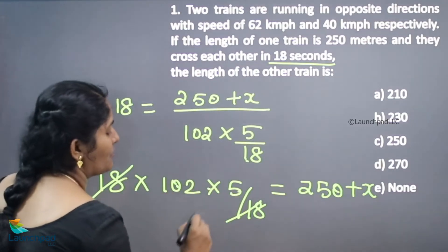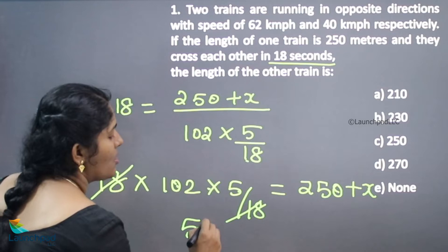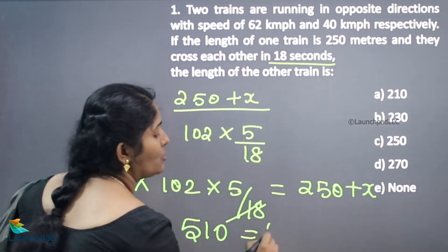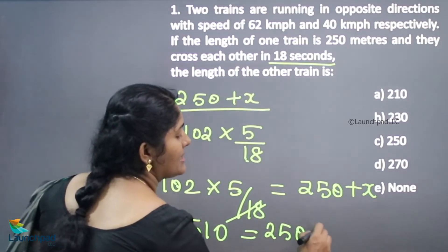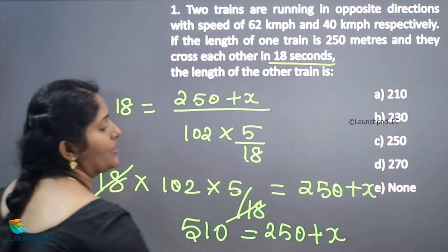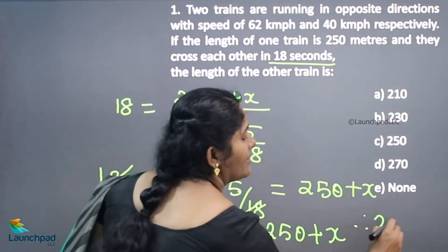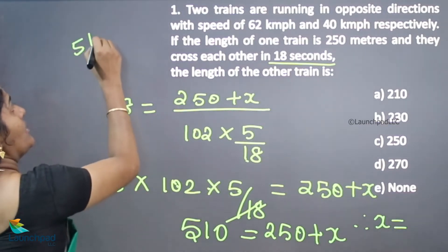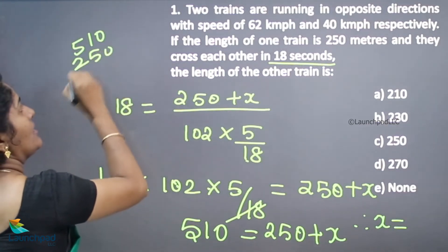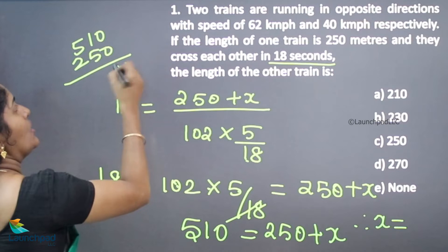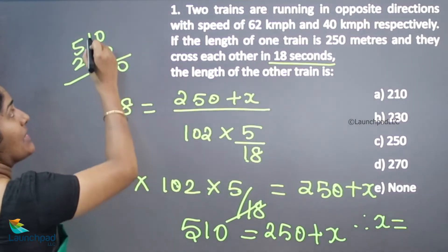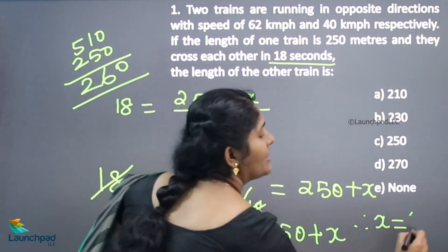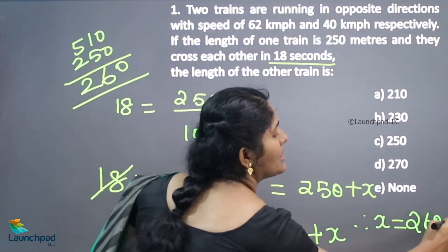So we get 102 into 5: 5 twos are 10, 1 two is 2 — that gives 510, which equals 250 plus x. Therefore the length of the other train is 510 minus 250. 510 minus 250: 11 minus 5 is 6, 4 minus 2 is 2 — so the length of the train is 260 meters.